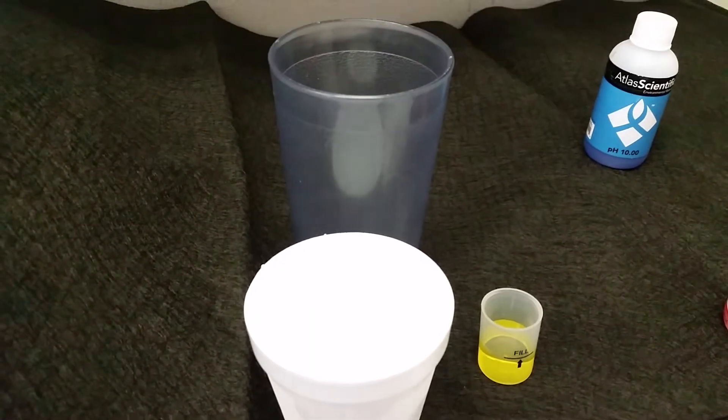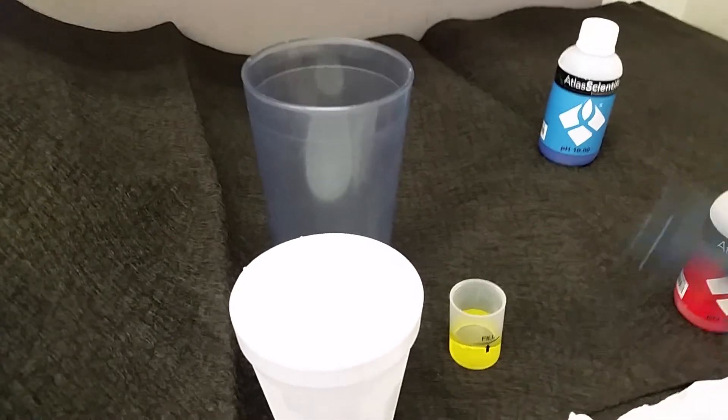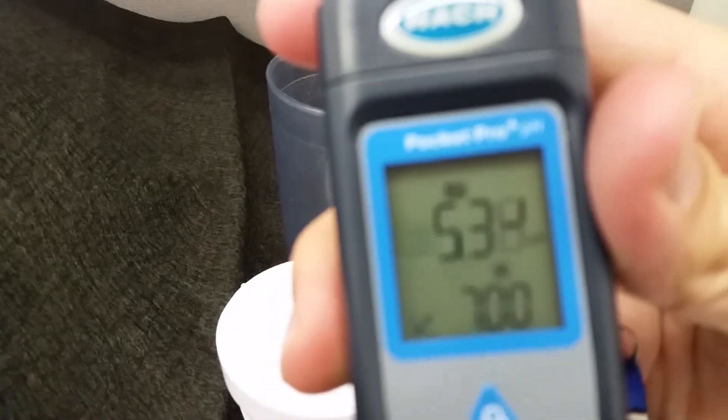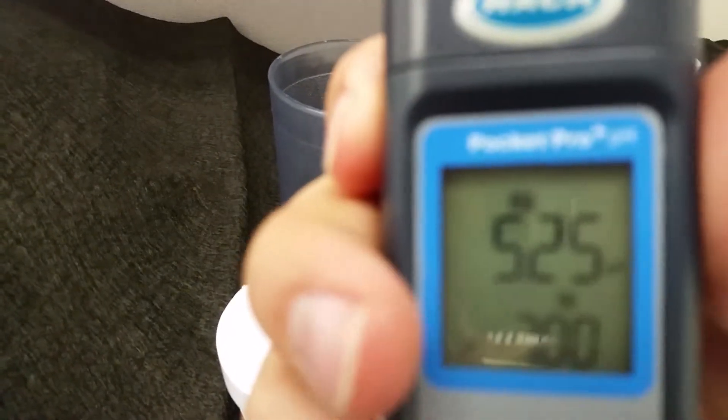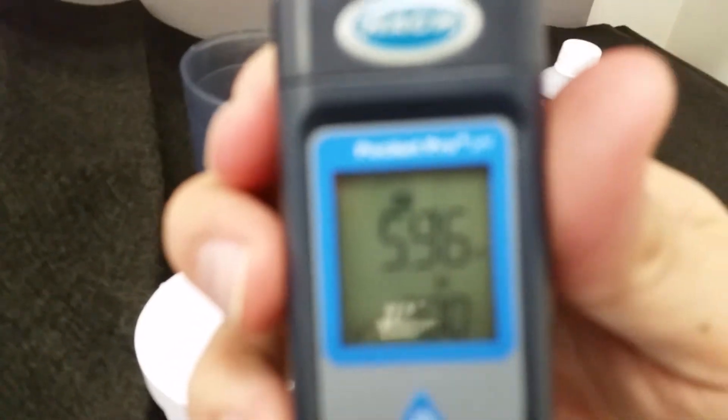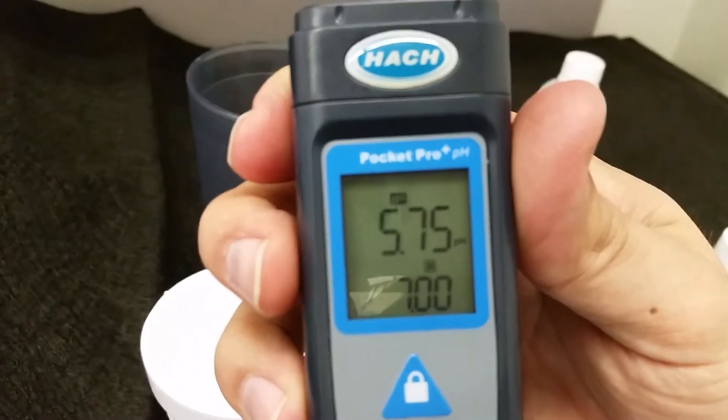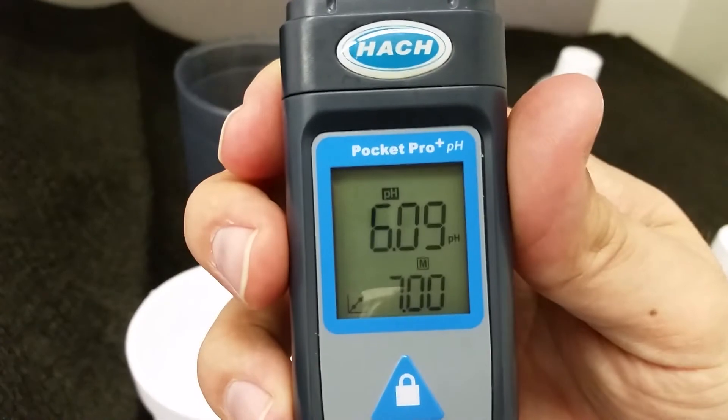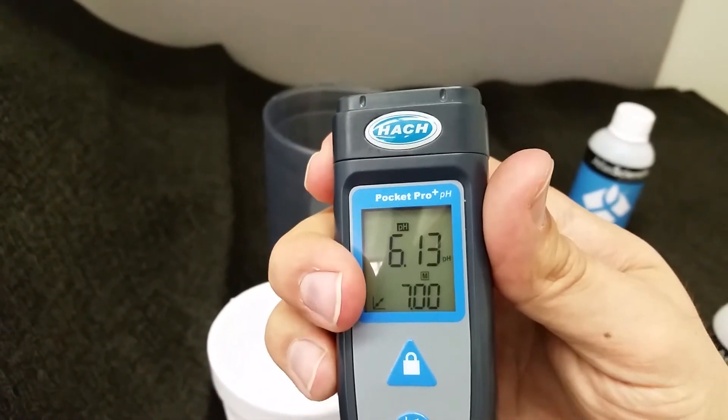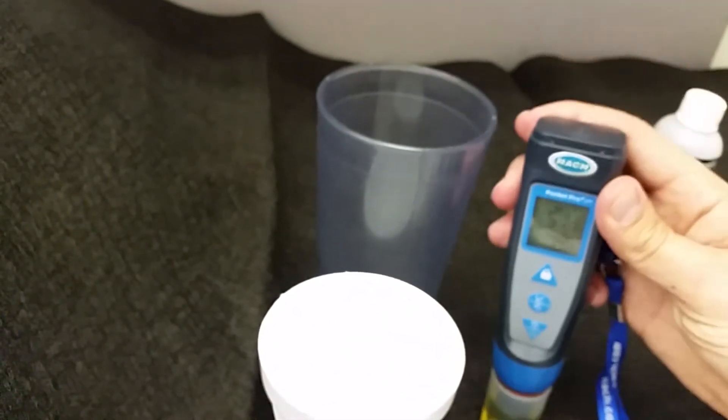Now you just dip this. So see how it says it's in pH mode, got the little calibration symbol right there. You can zoom in here, let's get a clear shot. So you see the little calibration thing there, you put it into the solution.